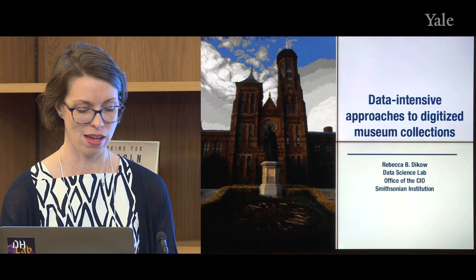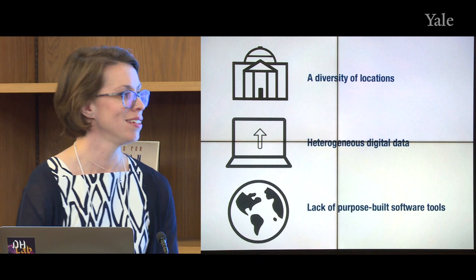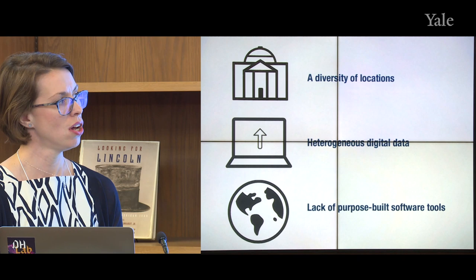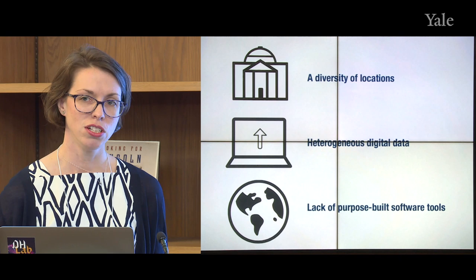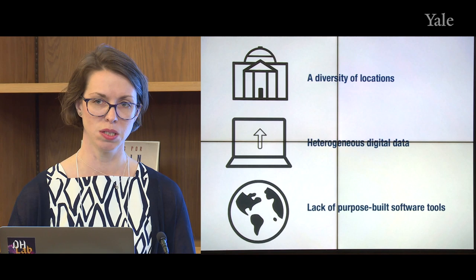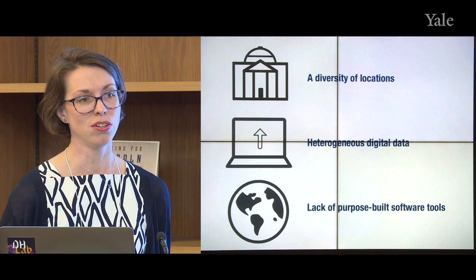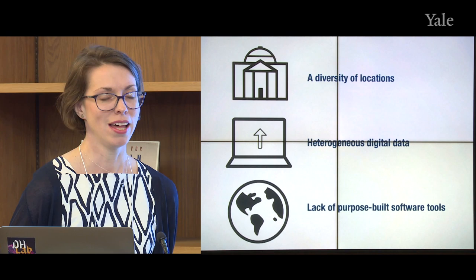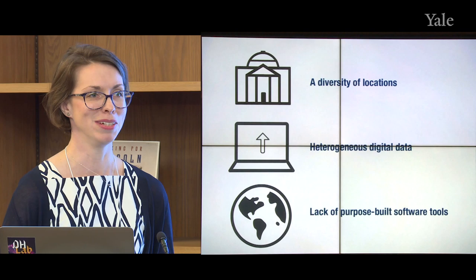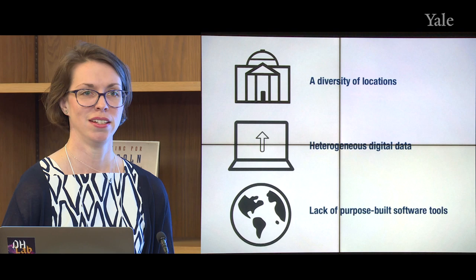The Smithsonian has a number of challenges to conducting large-scale informatics research: a large diversity of locations, heterogeneous kinds of digital data, incomplete metadata, and a lack of purpose-built software tools. This is particularly true for our biology groups, where most genomics tools have been developed around the human genome, and the genomes that Smithsonian scientists are interested in are everything but — from clams to bacteria to plants, pretty much anything you can imagine. So we're constantly on the lookout for new tools and seeing how our data fit into existing models.